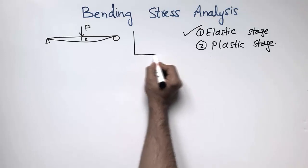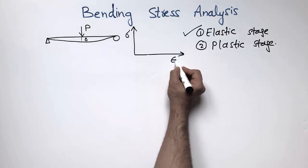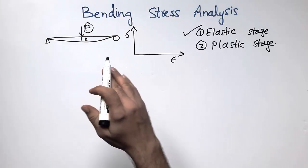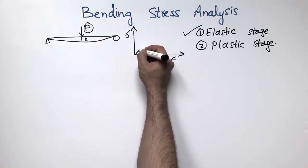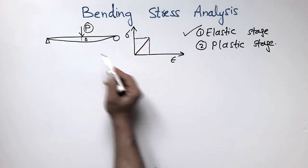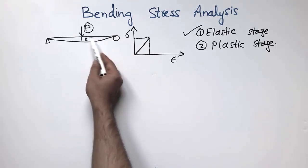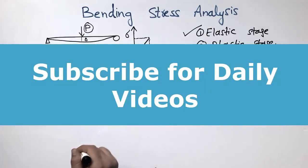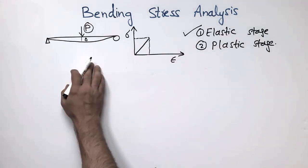If I draw the stress-strain diagram for this beam — stresses on the y-axis, strain on the x-axis — I assume that the load acting on this beam is too small and does not create stresses in the plastic stage, but only in the elastic range. If I remove this load, the beam will return to its original position, which means the stresses are in the elastic limit — we call this the elastic stage.